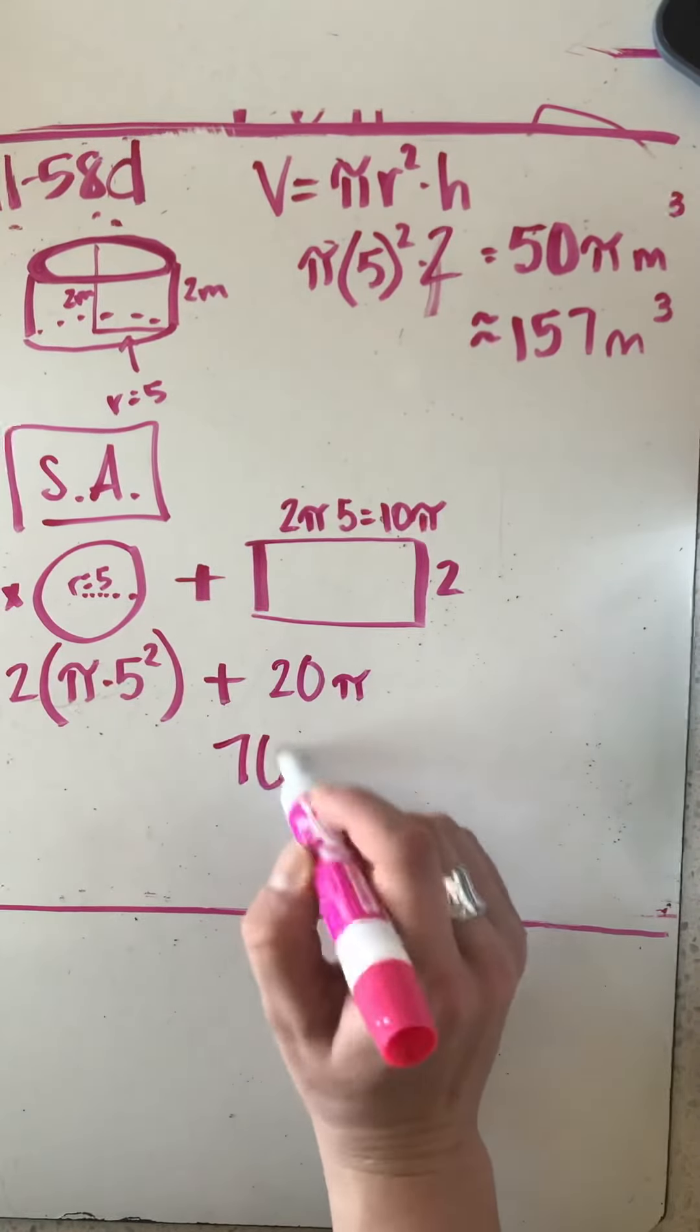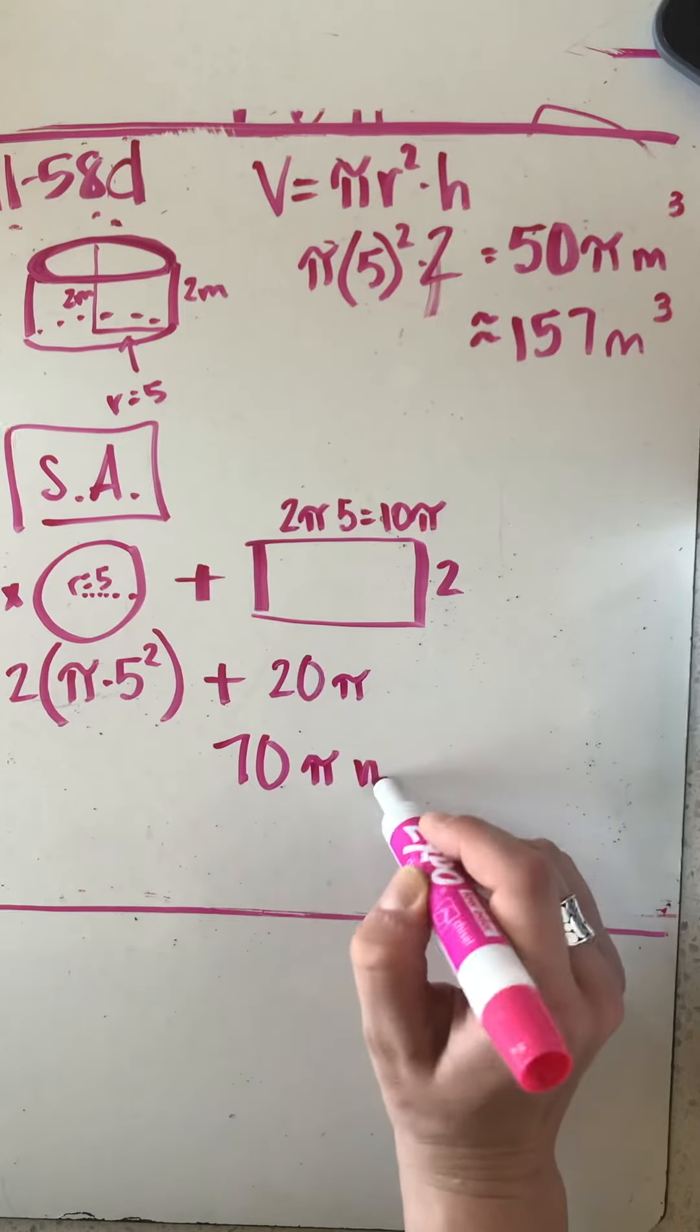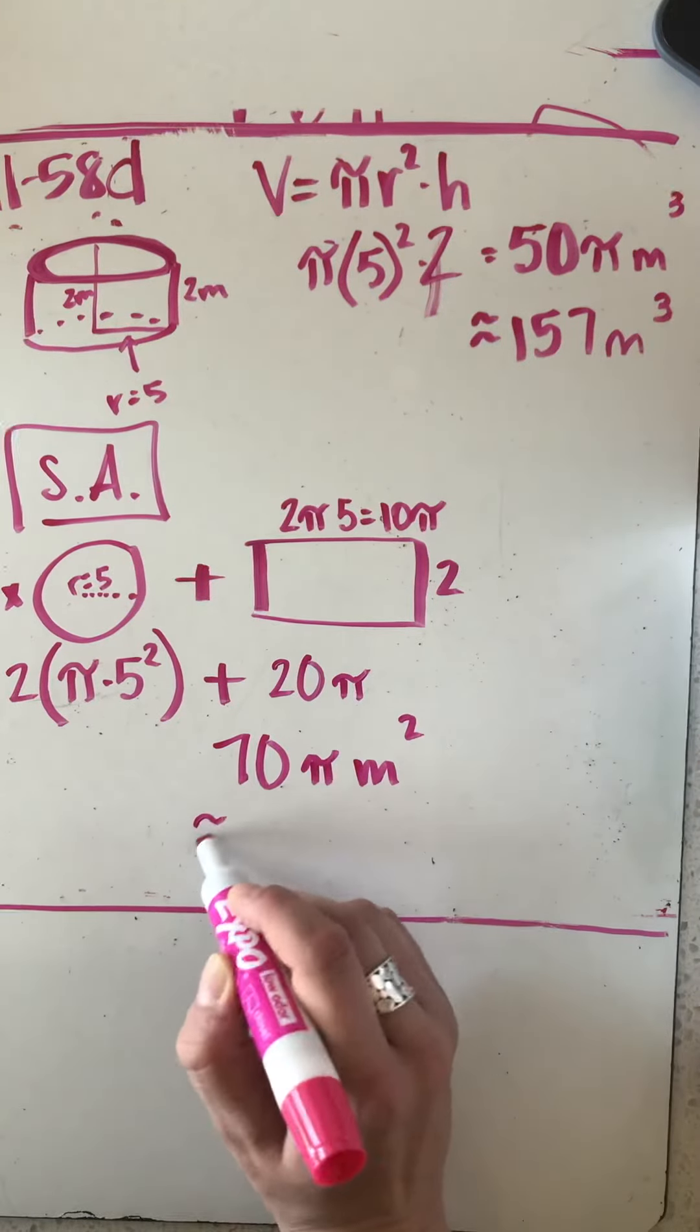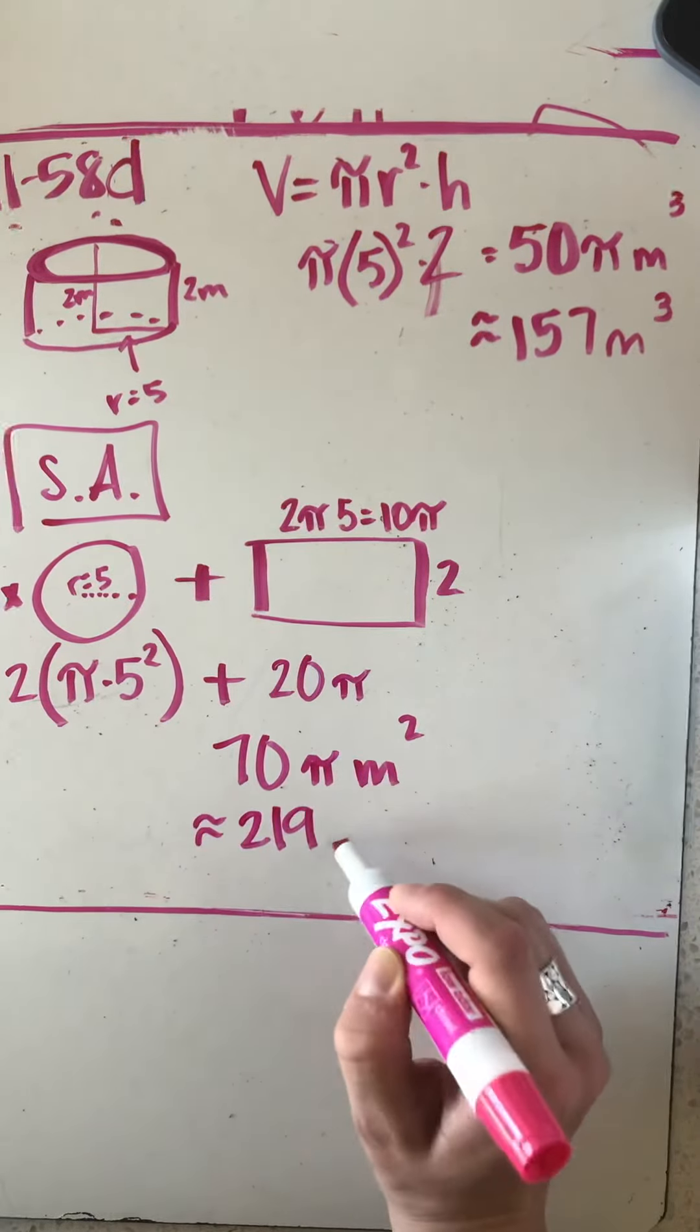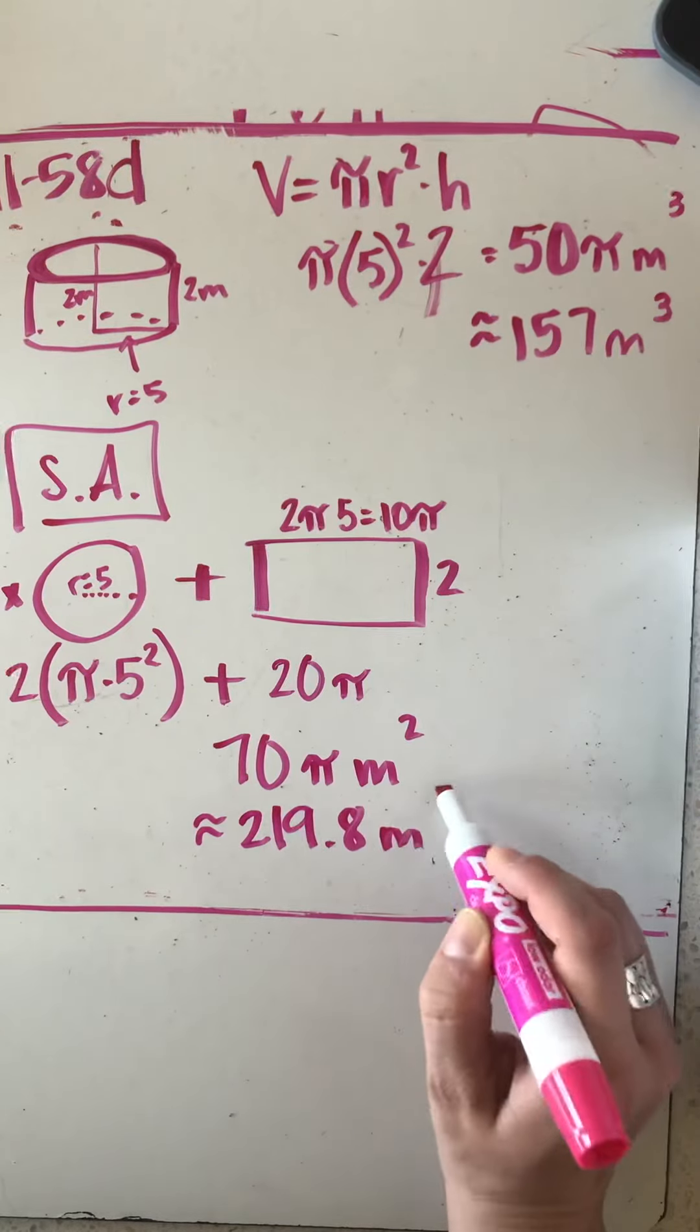That's 70π meters squared, or approximately 219.8 meters squared.